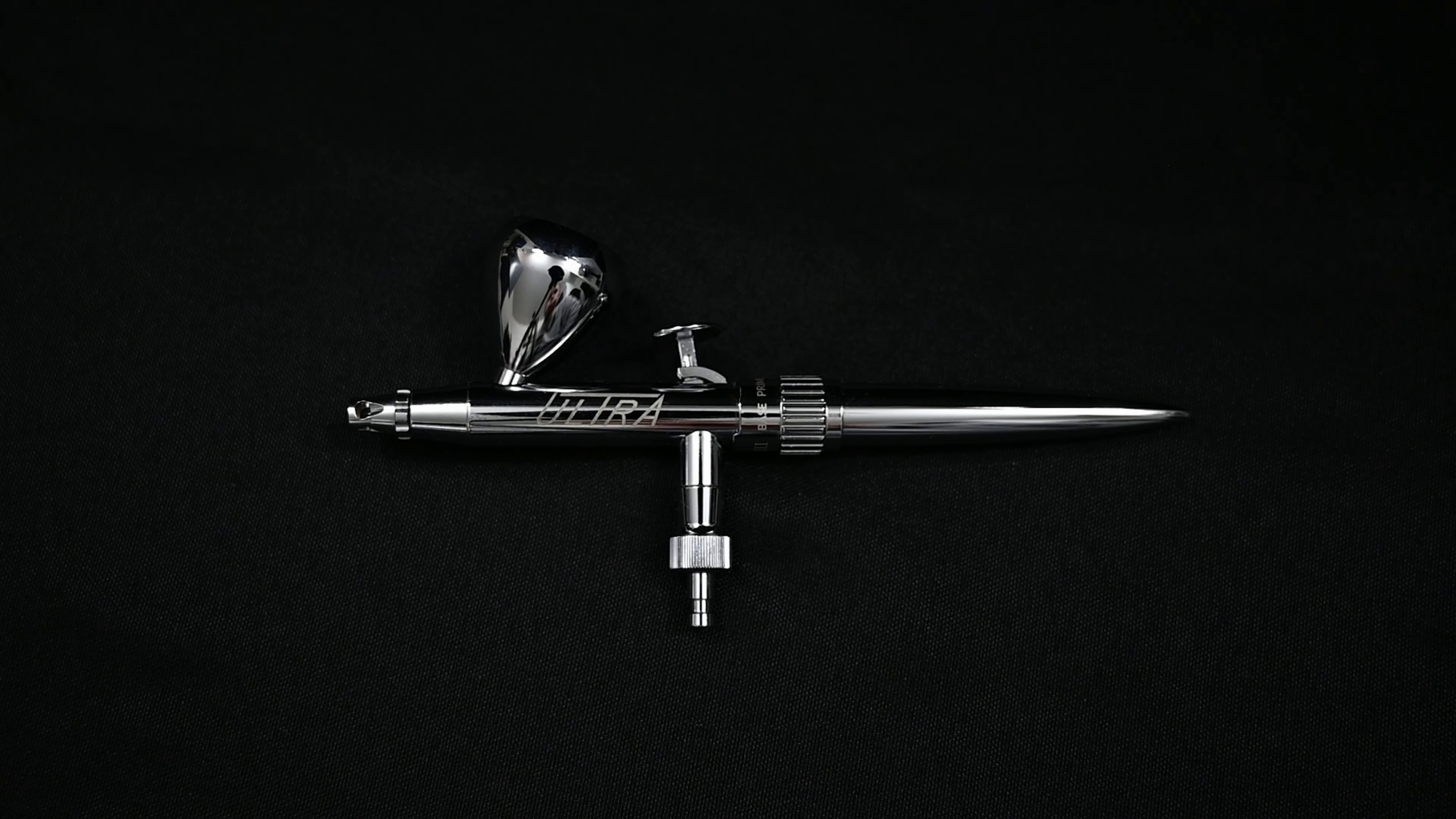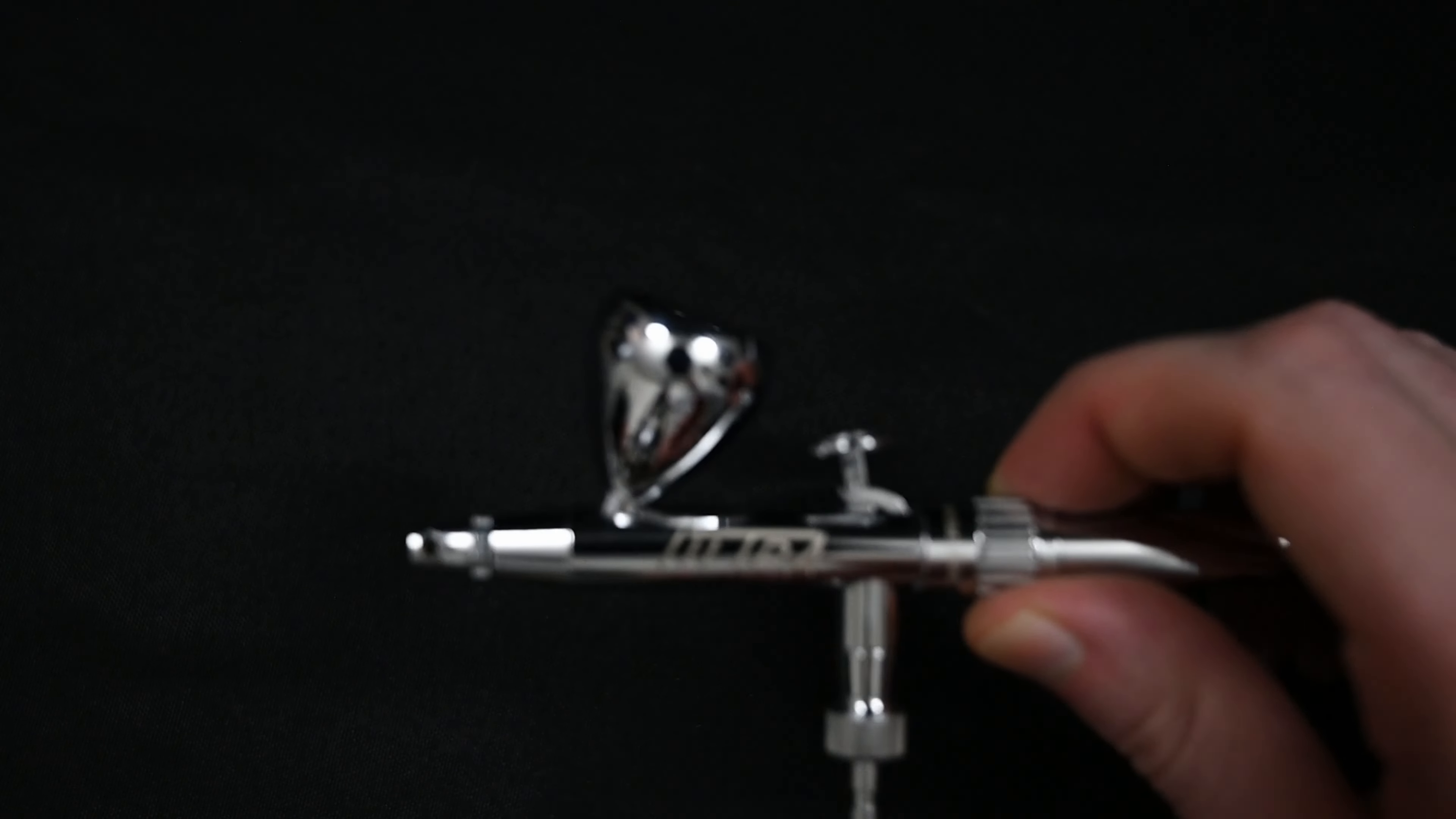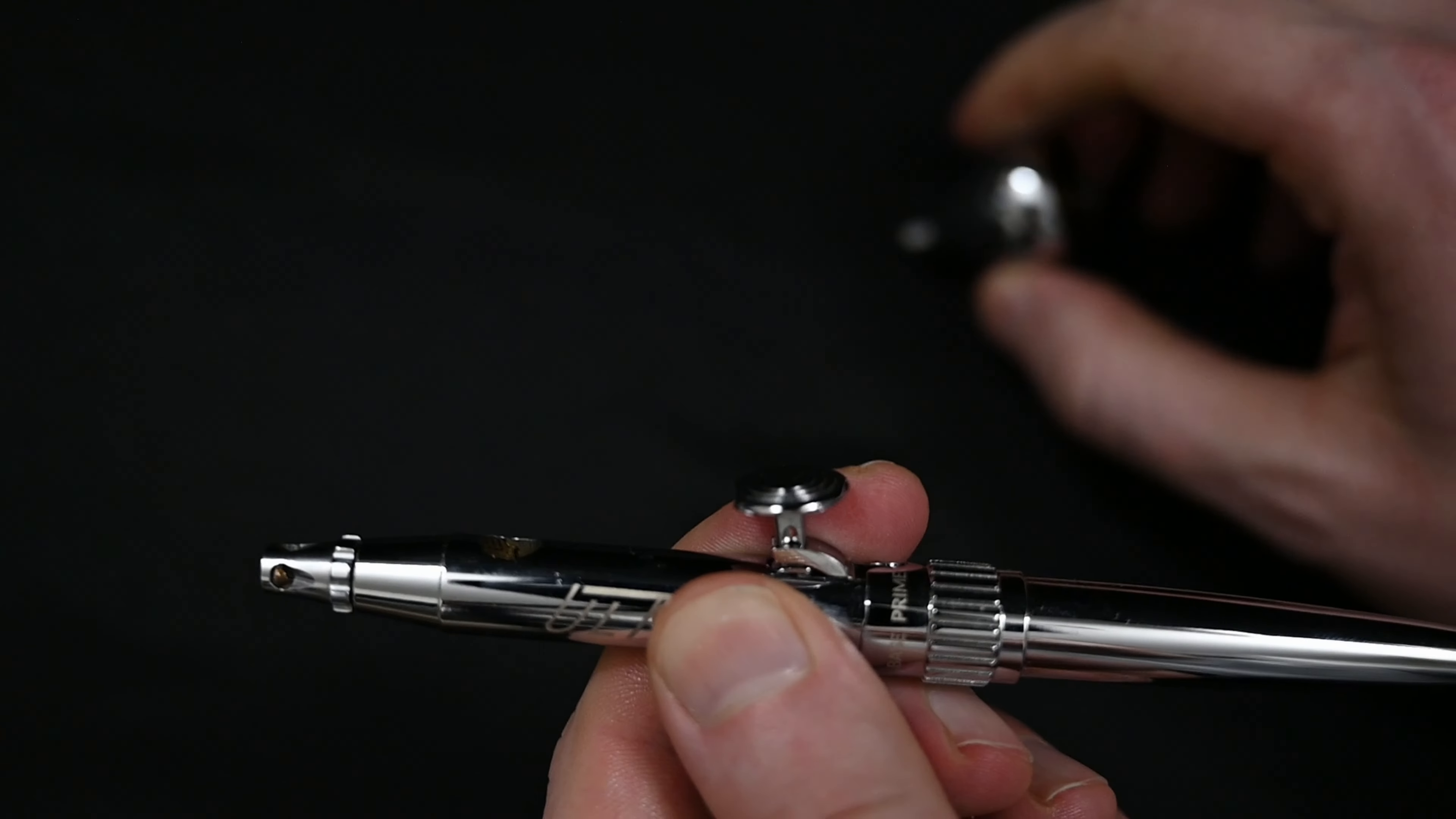When you buy the Ultra, it comes equipped with a 0.45 millimeter needle and nozzle. This is the perfect size to start out with, a great size for pretty much everything in airbrush painting. You can spray plenty of detail, which we'll see later, and also it's going to be more forgiving for some thicker paints. This is an updated nozzle size by Harder and Steenback, and I think it was a great choice to include on this one.